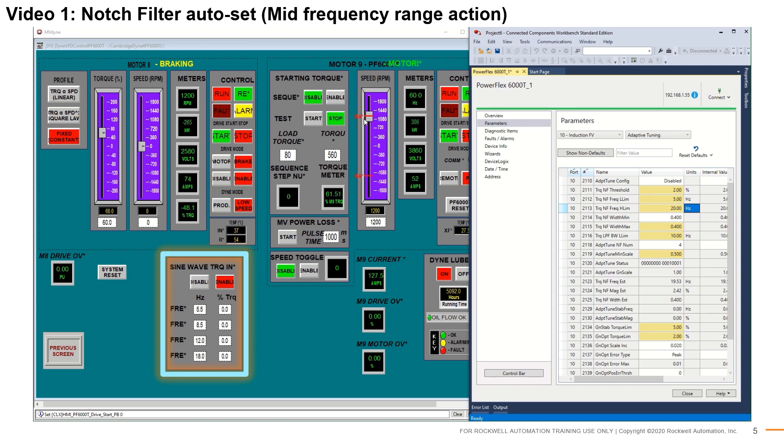On the left, a PLC program's interface is shown. The section of interest is the sine wave injection portion. We will be injecting three different frequencies and picking up one characteristic frequency. All four notch filters will be set at the end. On the right is the CCW interface you may already be familiar with. We will be focusing on the adaptive tuning and torque filtering set of parameters.